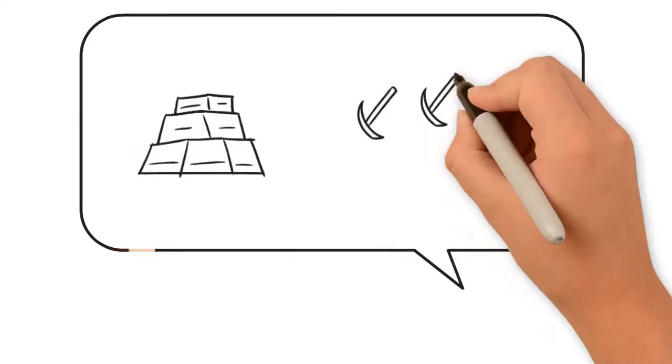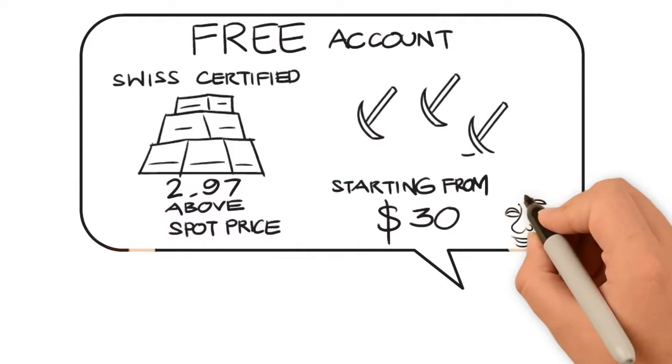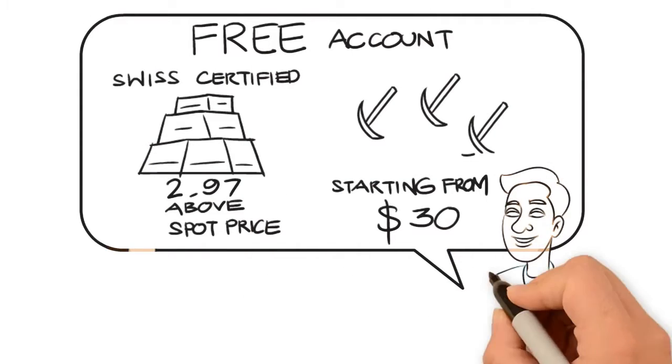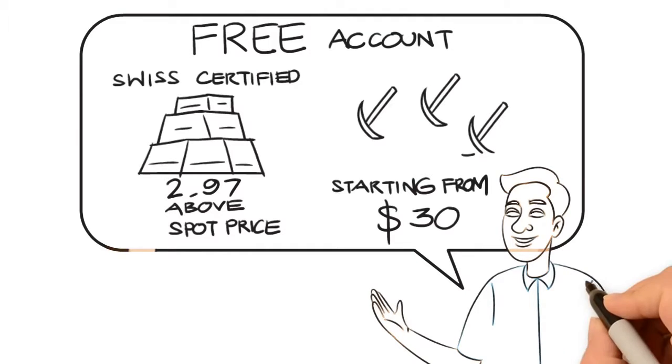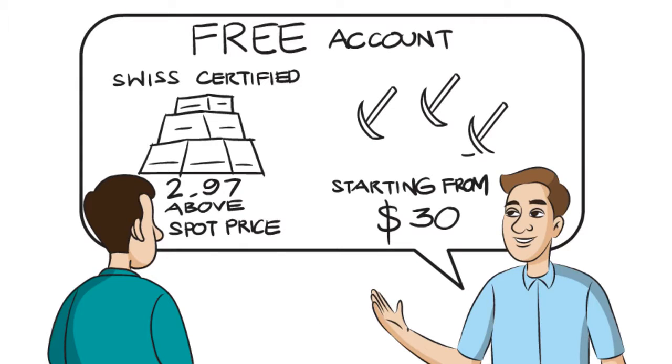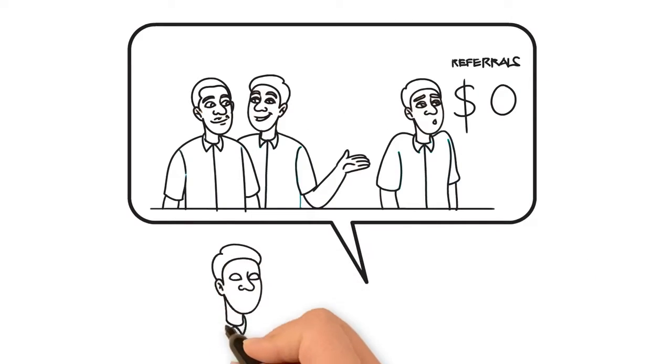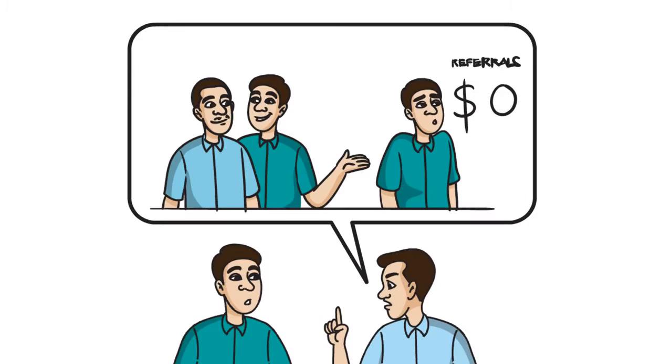So Oscar gave them different options to start from. He said you can set up a free account and buy your Swiss certified gold and silver for just $2.97 above spot price, and additional mining power starting from $30. This would also pay them a daily return, but they wouldn't be getting paid for referring others to buy Swiss gold, silver, or digital mining.